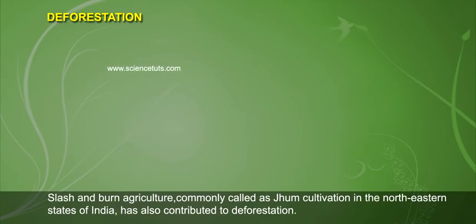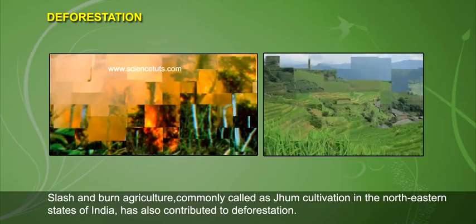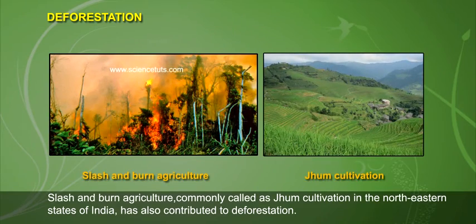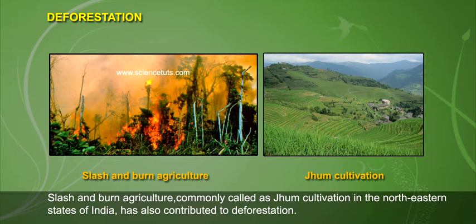Slash and burn agriculture, commonly called jhum cultivation in the northeastern states of India, has also contributed to deforestation.